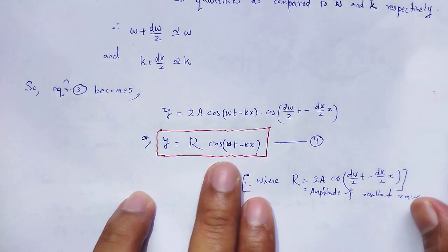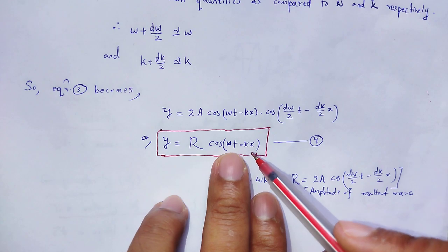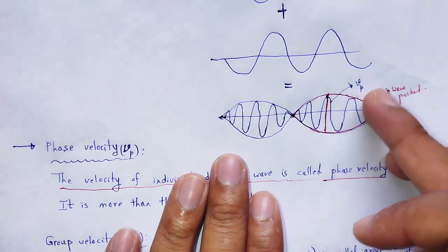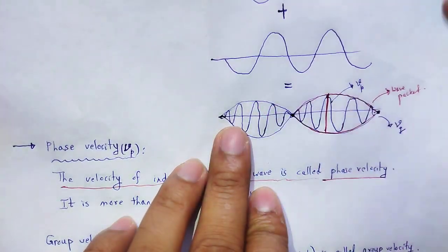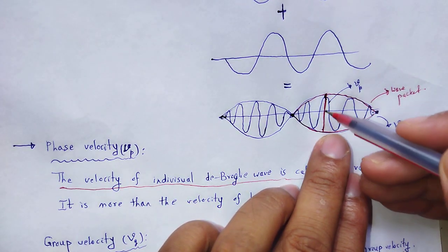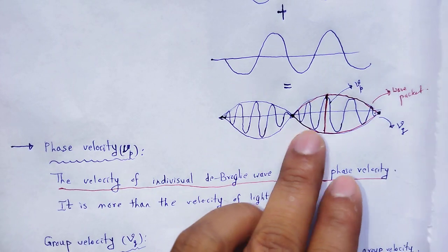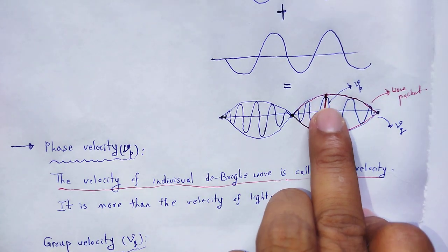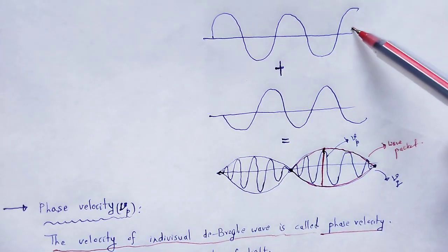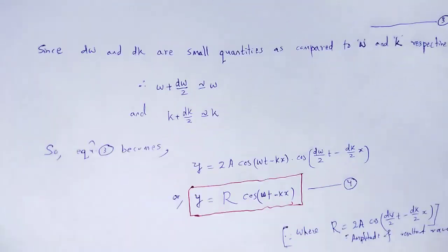The resultant amplitude r = 2a cos(dω/2 · t − dk/2 · x). If that wave has angular frequency ω and propagation constant k, within this there will be an amplitude; here the wave consists of angular frequency dω/2 and propagation constant dk/2. In the figure it can be easily shown: one wave and another wave superimposed to form a wave packet.